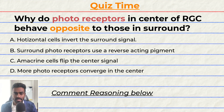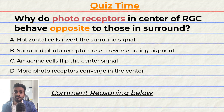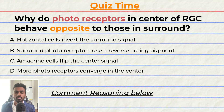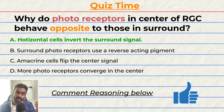Quiz time. Why do photoreceptors in the center region of a retinal ganglion cell's receptive field behave oppositely to those in the surround? A. Horizontal cells invert the surround signal. B. Surround photoreceptors use a reverse-acting pigment. C. Endocrine cells flip the center signal. D. More photoreceptors converge in the center. The correct answer is A. Can you tell me why? Give your reasoning in the comments and let's have a discussion. If you think I deserve it, please consider giving this video a like.